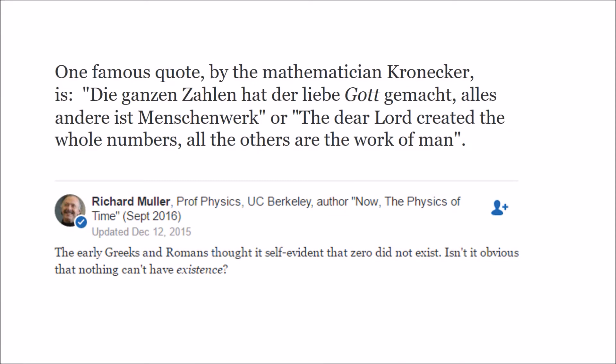Let's look at the existence of natural numbers and a quote from a very famous mathematician. When we talk about whole numbers — starting with zero, and then 1, 2, 3, 4, 5 — according to this theory, those numbers are the dear Lord's, meaning they exist without human consciousness. But then the other numbers — fractions, decimals, infinite numbers, and irrational numbers — those are the work of men. We're going to explore that claim.